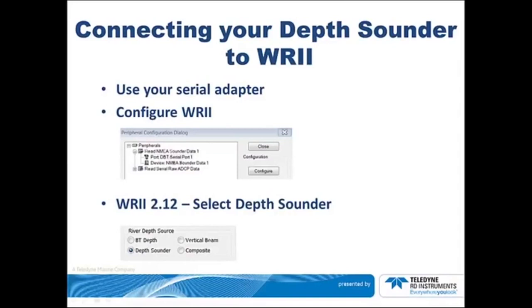A separate COM port is required for the depth sounder. Set the baud rate on the port. In WinRiver 2, select the Processing tab in the Field Configuration and select Depth Sounder.